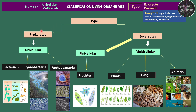The prokaryote type is only unicellular and is represented by bacteria and cyanobacteria — bacteria with different shapes, and cyanobacteria, classically called the blue-green algae. There is another type called archaebacteria, a specific prokaryote that lives in very harsh environments, such as environments of high temperature or high salt concentration.